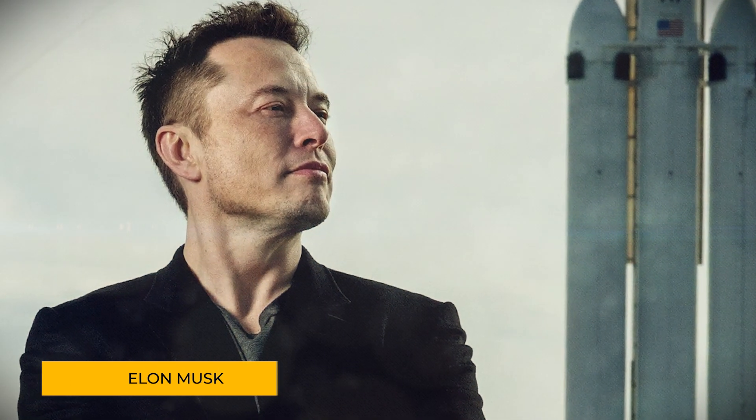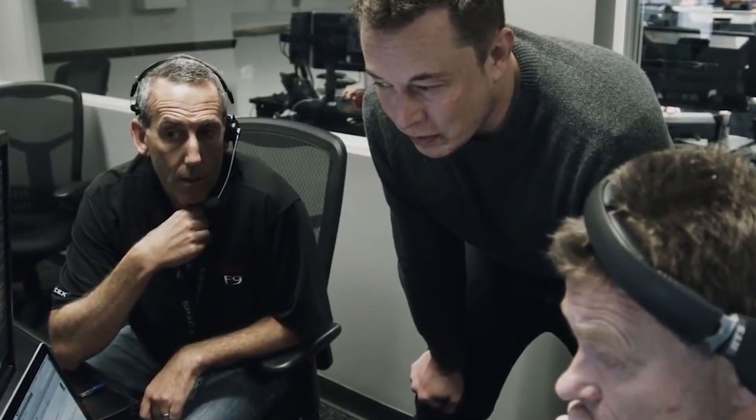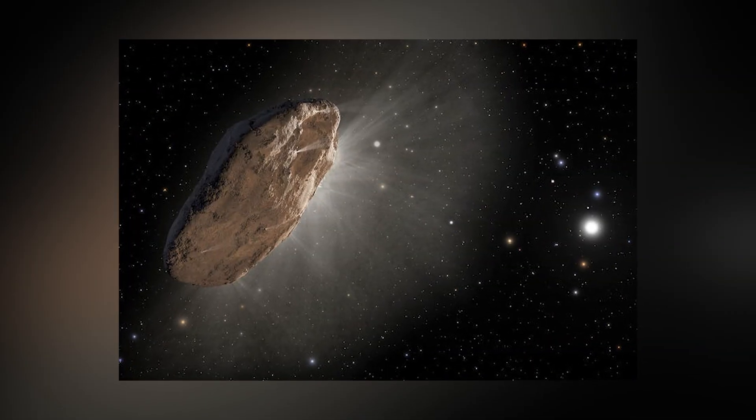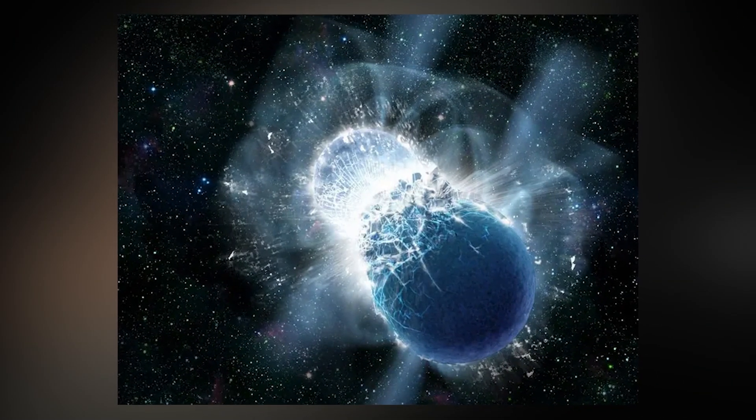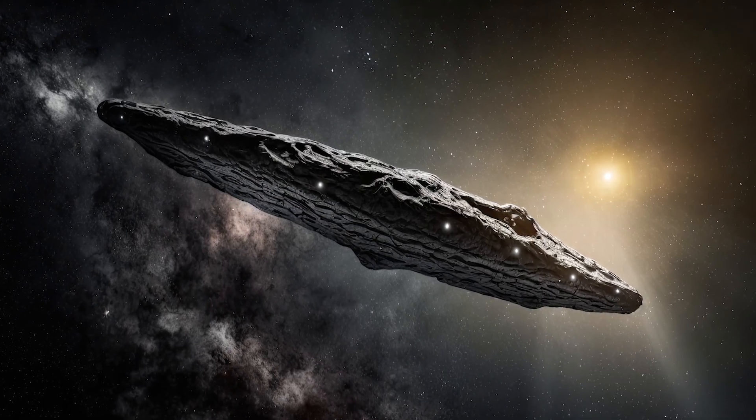Meanwhile, billionaire entrepreneur Elon Musk has a different take. He speculates that this interstellar traveler could have formed from the collision and fusion of two celestial bodies, giving it its peculiar shape.